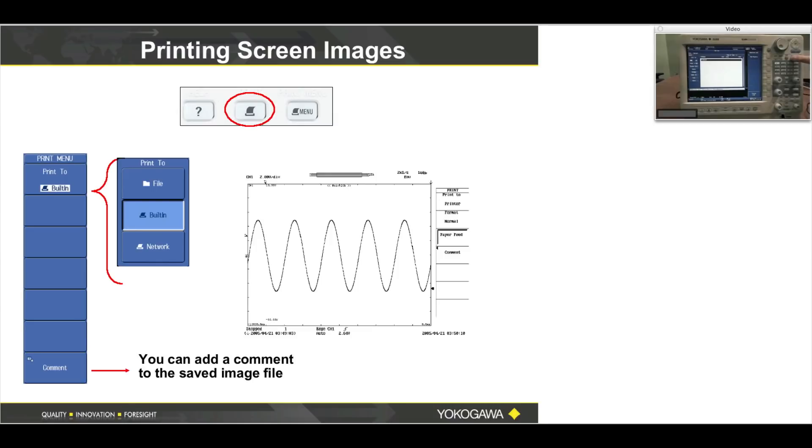We have another way to save an image file. The exercise that you just did, you can save a waveform and a screen image simultaneously with one button. This next exercise will be very similar. Let's go to Shift, Save. Soft Menu button number four, it says Image Save. Turn that on. Soft Menu button number five, Image Save Setup.